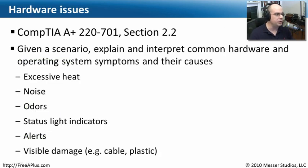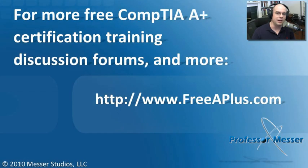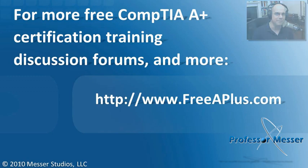That covers what we need to know for the 220-701, Section 2.2. We've looked at excessive heat, noise, odors, status light indicators, alerts, and visible damage. If you'd like to see any of our other free A-plus videos, participate in our message boards, and much more, you can visit our website, freeaplus.com.